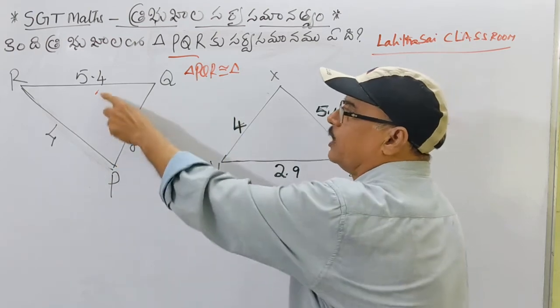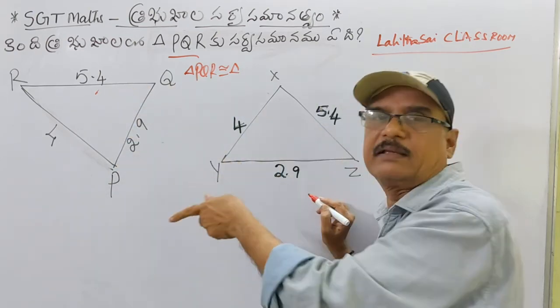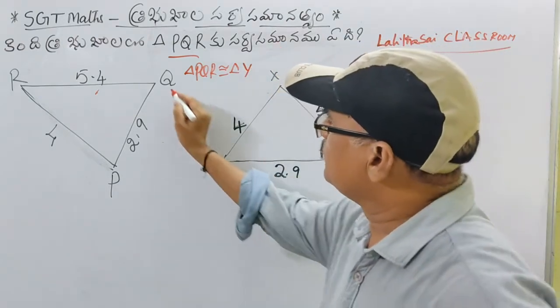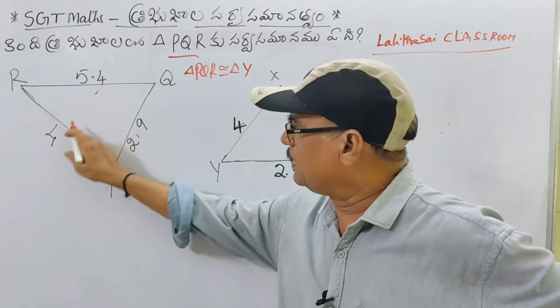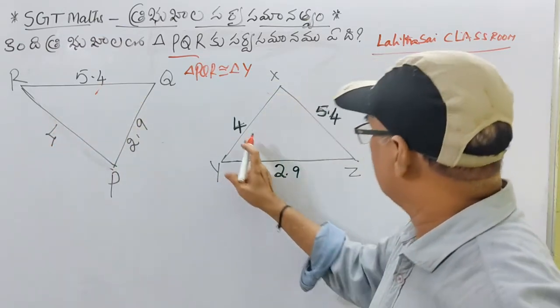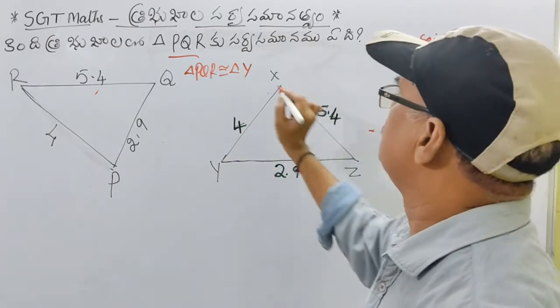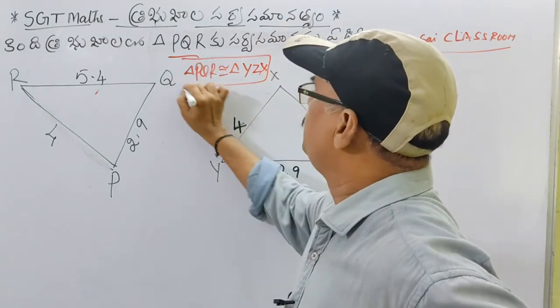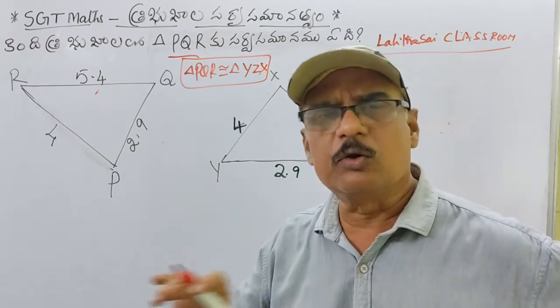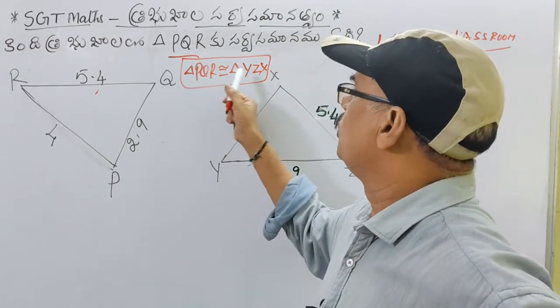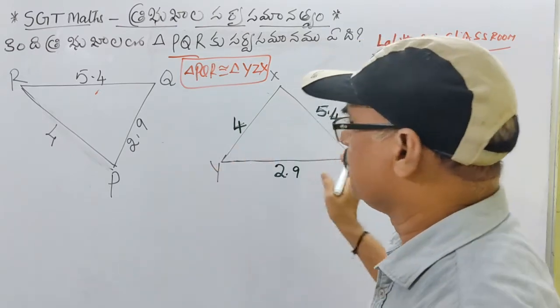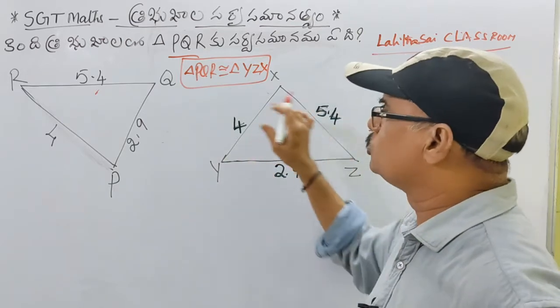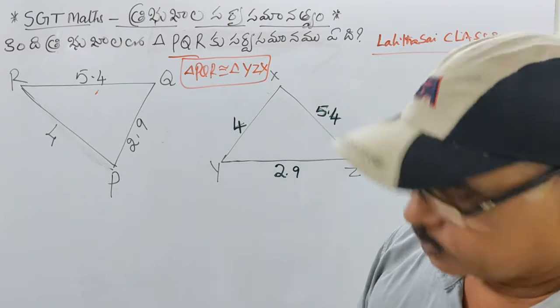The system shows 5.4 equal to 5.4. In triangle PQR, all sides are equal - it's sarvasamana. So when you write it, it's not XYZ, it's YZX. You need to write the angles in proper order: YZX. In the test, this is how you should mark it - note this carefully.